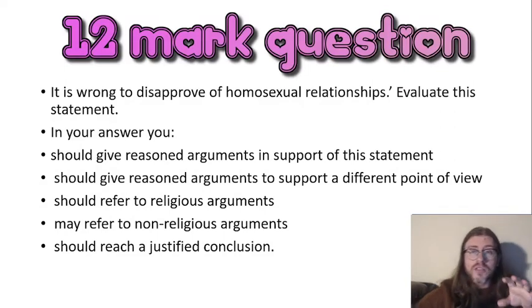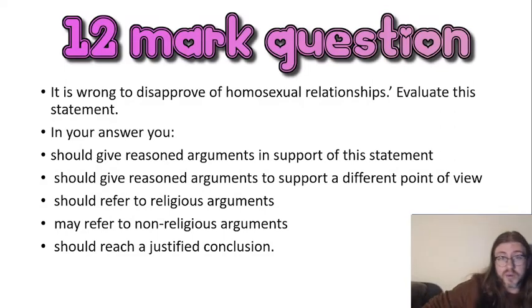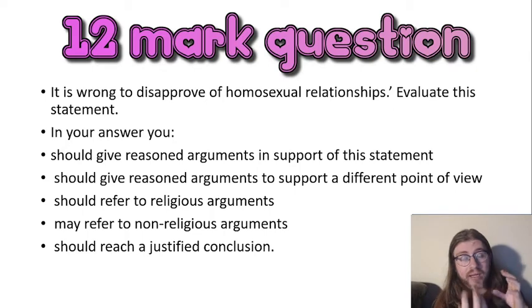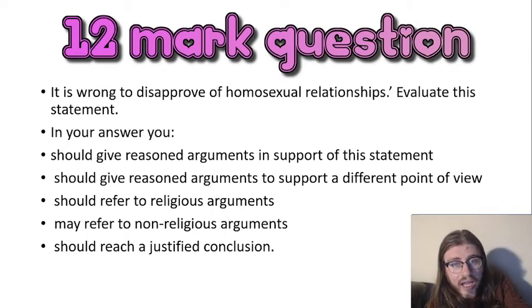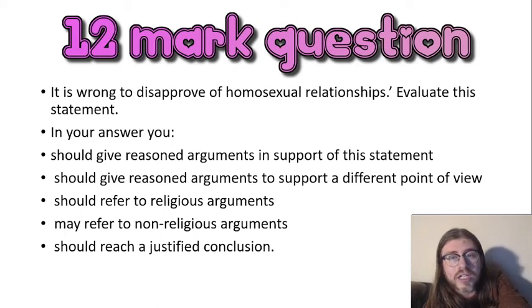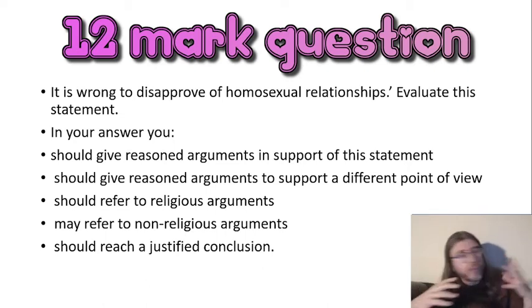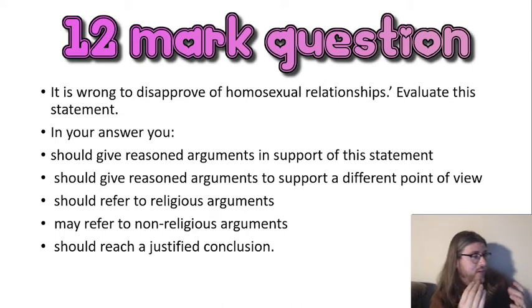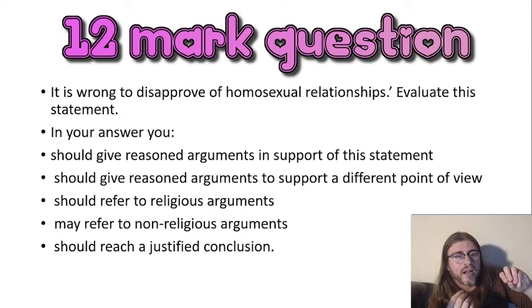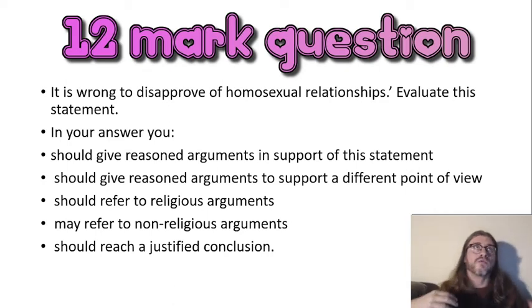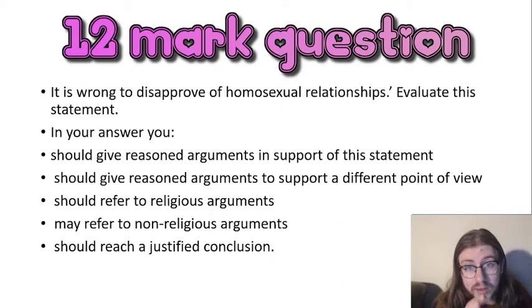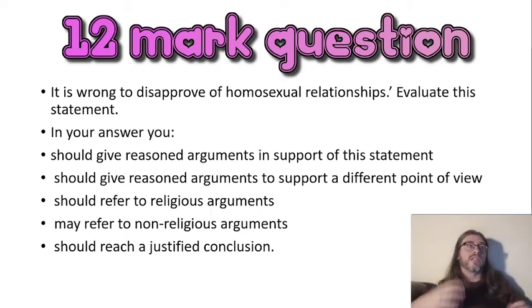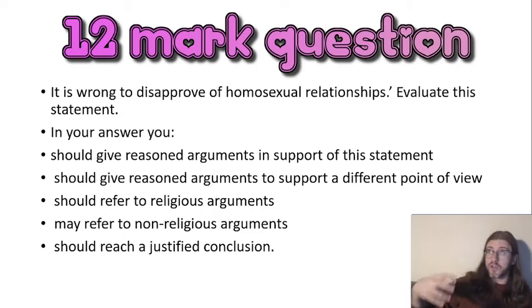A possible 12 mark question: 'It is wrong to disapprove of homosexual relationships.' Be really careful about whether you're agreeing or disagreeing with a question like this - it's a double negative. What a pain to put a double negative in a question. It's saying it's wrong to disapprove, so it's saying you have to approve of homosexual relationships - it's wrong to be against them. So if you agree you're saying homosexual relationships are a good thing, and if you disagree you're saying they're a bad thing.